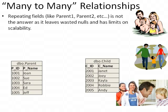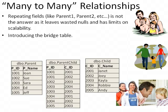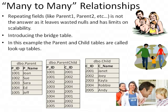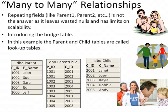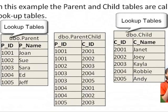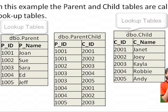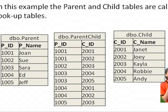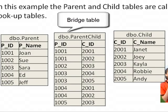Repeating fields like parent 1, parent 2 is not the answer. It leaves you with wasted nulls and has a lot of limits on scalability. We introduce the bridge table. In this example, the parent and child tables are called lookup tables. The table in the middle is called a bridge table, and sometimes called a junction or a mapping table.